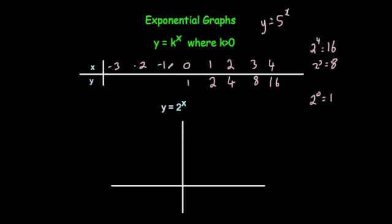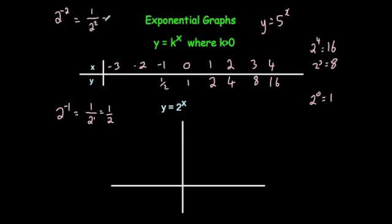Let's look at the negative powers. 2 to the power of x when x is equal to minus 1: that's 2 to the minus 1. Remember, a minus power means you put 1 over, and then 2 to the positive number — so 1 over 2 to the 1 is 1 over 2, which is a half. 2 to the power of minus 2 would be equal to 1 over 2 squared, and 2 squared is 4, so that's 1 quarter. And 2 to the power of minus 3 would be 1 over 2 cubed, which is 1 over 8.